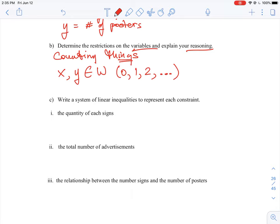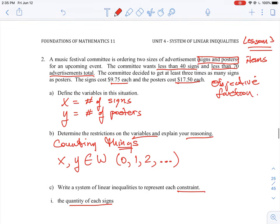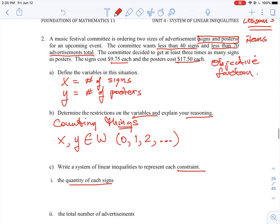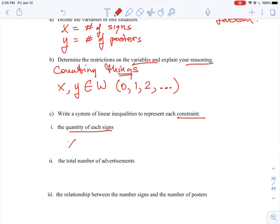So we write a system of inequalities to represent each constraint. Now we're looking at the quantity of signs. So we have to go back to our question. And the committee wants less than 40 signs. So that means x has to be less than or equal to 40. Because we can't produce more than 40 signs. We could have 39, we could have 0, but the limit is 40.